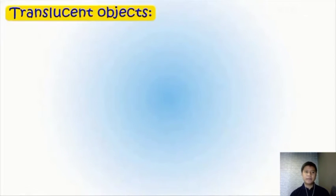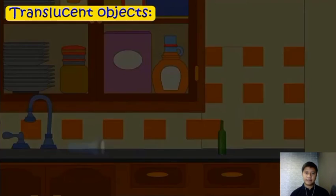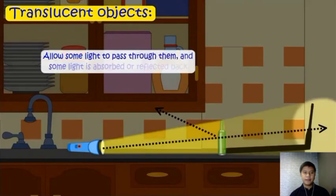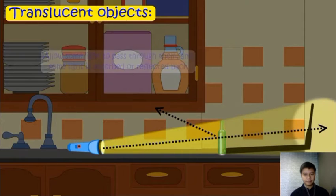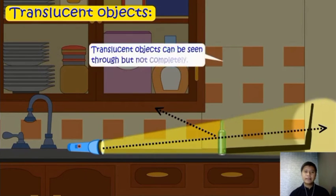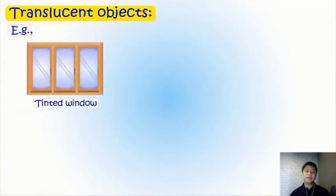Next, we have translucent objects. They allow some light to pass through them and some light is absorbed or reflected back. Translucent objects can be seen through but not completely.